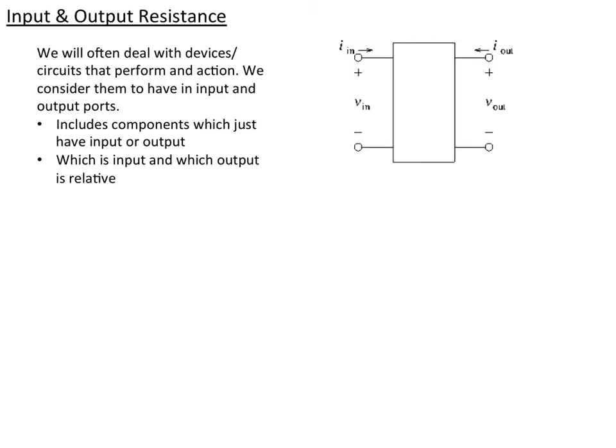The last few lectures and segments, we've talked about formal ways of calculating voltages and circuits and currents in various parts of the circuit. I want to turn to a more practical issue, which is if we have a device that we can characterize that does something, we can consider it to have an input and an output, and we can consider those to be ports.